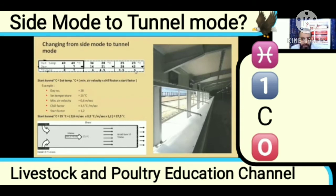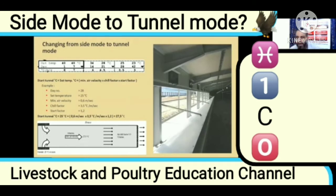The simple thing here is this is your formula — the tunnel formula. If you look at the chill factor chart and you don't have a chart available, then you can do your own design manually.